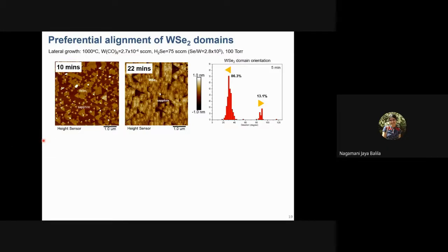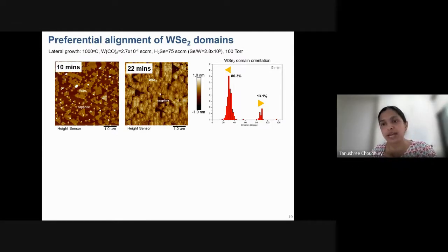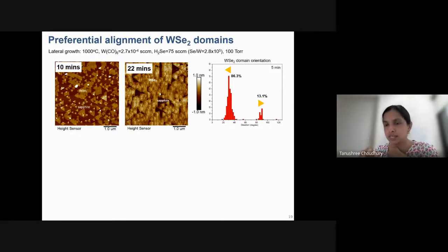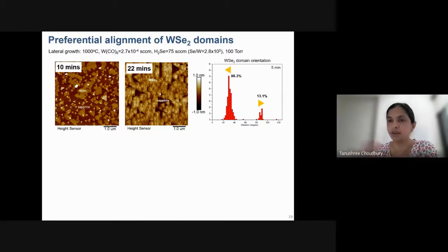A question arose about why nuclei go to the terrace edge rather than the kink. We think it is related to the termination of the edge — the precursor complex (likely a tungsten-selenium complex formed from gas-phase reactions) prefers the top of the terrace rather than the bottom. Modeling is underway to confirm whether the tungsten hexacarbonyl and hydrogen selenide react in the gas phase to form a complex that preferentially adsorbs at terrace edges under the growth conditions used.